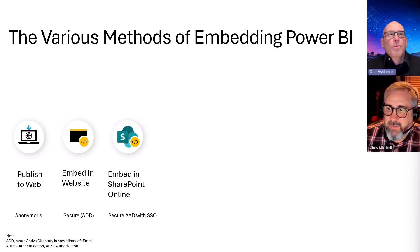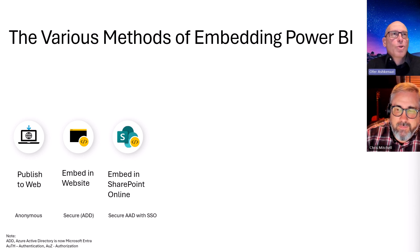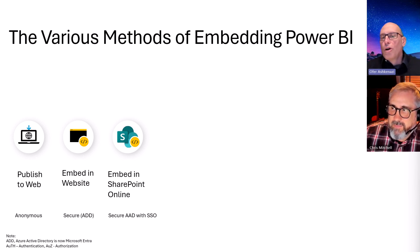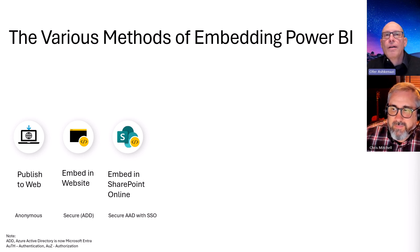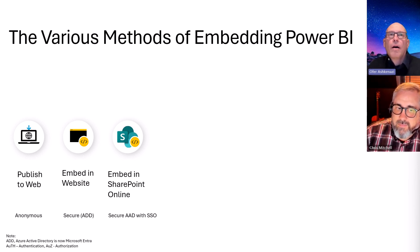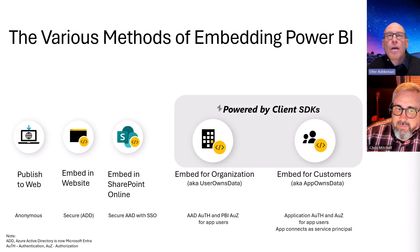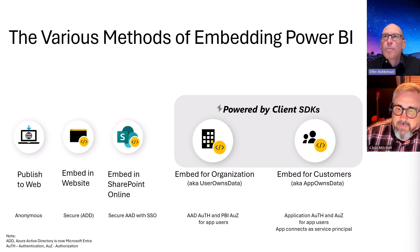The first three options on the left-hand side talk about the rudimentary options of embedding — very basic stuff — just choosing the report to embed and auto-generating some iframe code for it, or being able to specify, if you look at embedding in a website or SharePoint Online, the page or some filters in the URL, and maybe even doing some single sign-on. But it's very rudimentary authentication, always based on AD or completely anonymous.